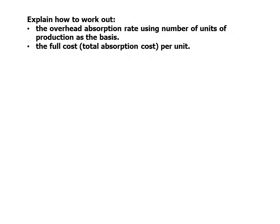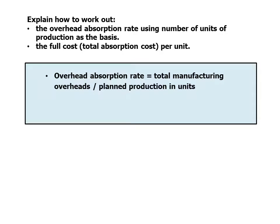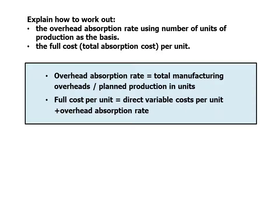Explain how to work out: first, the overhead absorption rate using number of units of production as the basis, and secondly, the full cost or total absorption cost per unit. The overhead absorption rate is equal to the total manufacturing overheads divided by planned production over the period in units. The full cost per unit is direct variable cost per unit plus the overhead absorption rate.